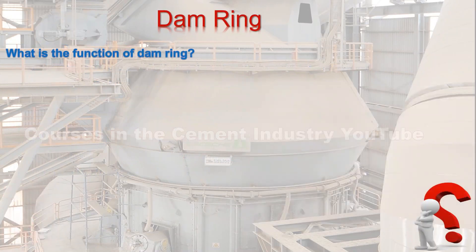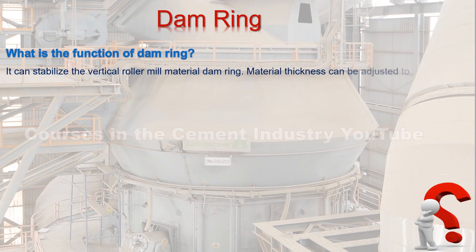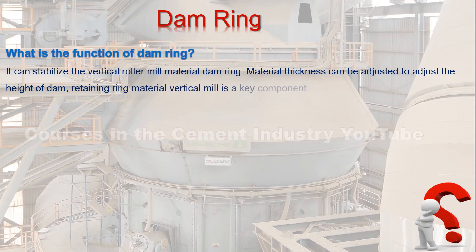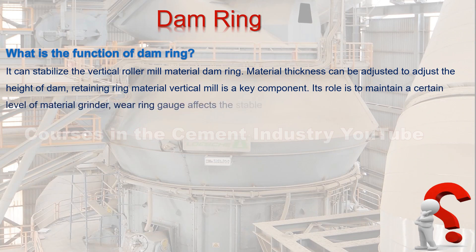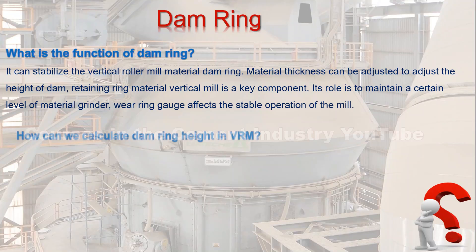What is the function of the dam ring? It can stabilize the vertical roller mill material. The dam ring material thickness can be adjusted to control the height of the retaining ring material. It is a key component whose role is to maintain a certain level of material on the grinder, and the ring height affects the stable operation of the mill.